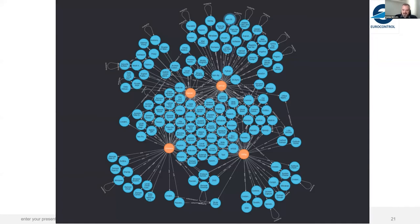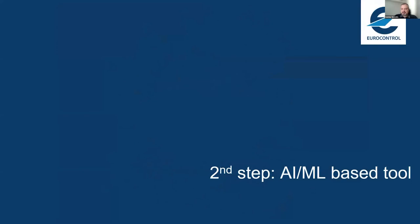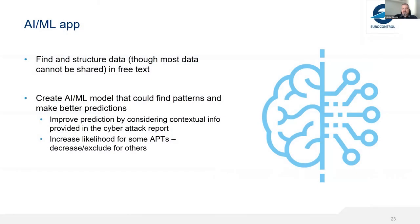The second step is using machine learning to improve attribution. The basic idea is to develop a machine learning application that constantly scans free text or intelligence reports that may not include a list of TTPs. From that intelligence report or free text, it extracts TTPs, builds a list of data, structures it, and then builds the estimation model for context and for APT groups.